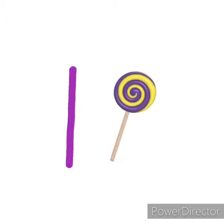So children, now let us see the numbers along with the values. Okay children, look here. This is number 1 and 1 lollipop. Number 1, 1 lollipop.